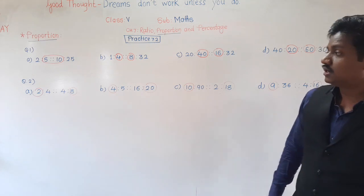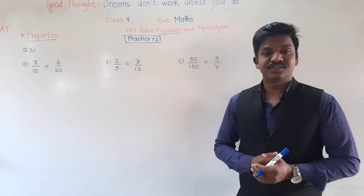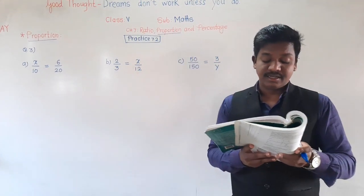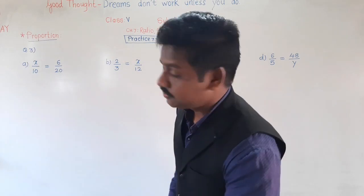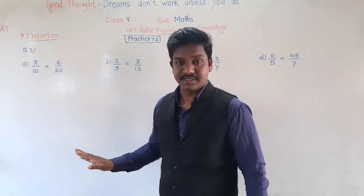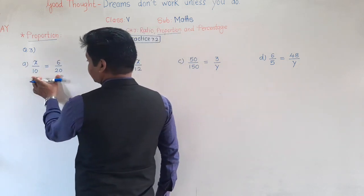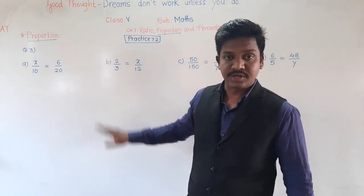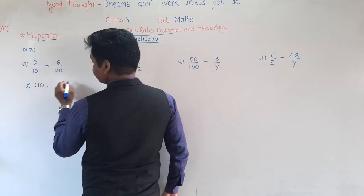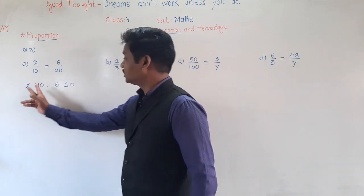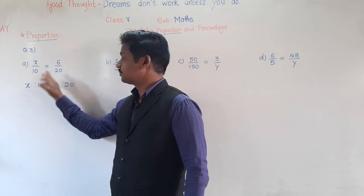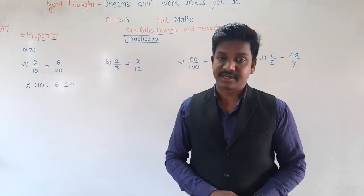Identifying means and extremes is the first step towards solving proportion questions. Now see question number three in practice 7.2: find the missing number in each of the following. Question A is: x upon 10 is equal to 6 upon 20. This means x is to 10 is same as 6 is to 20 — two equal ratios, so they are in proportion. Three terms are given and one term, the missing term, is to be found.